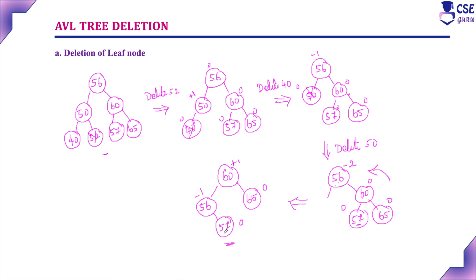Deleting nodes 57, 56, or 65 from this tree will also result in a balanced tree.